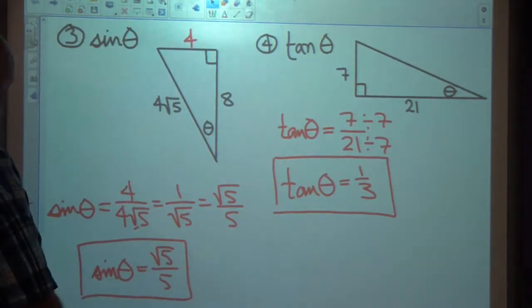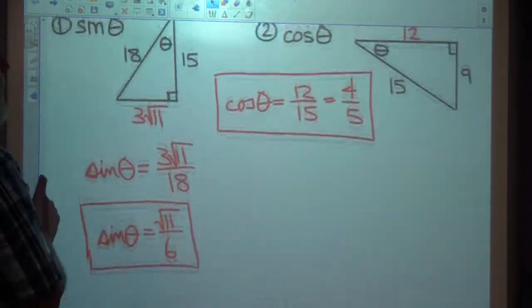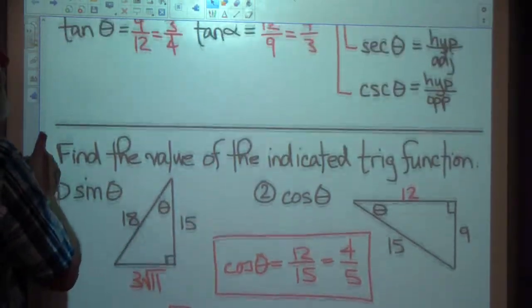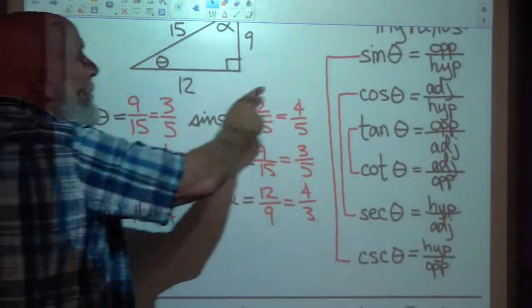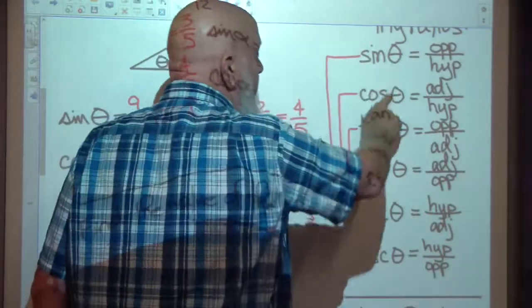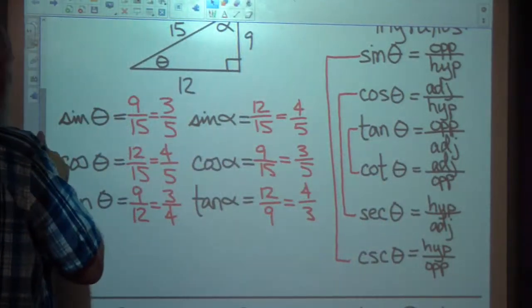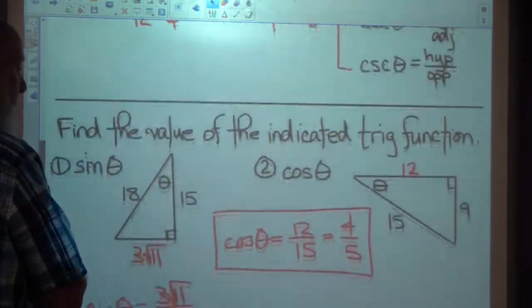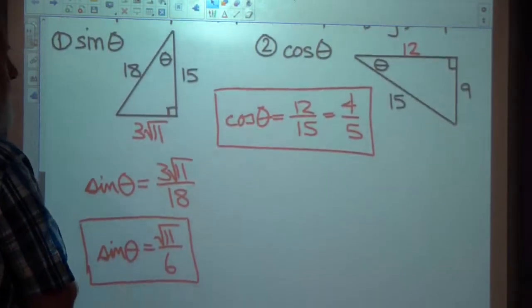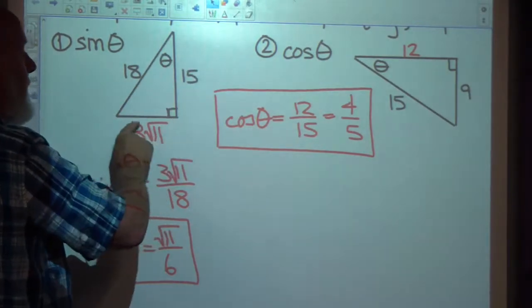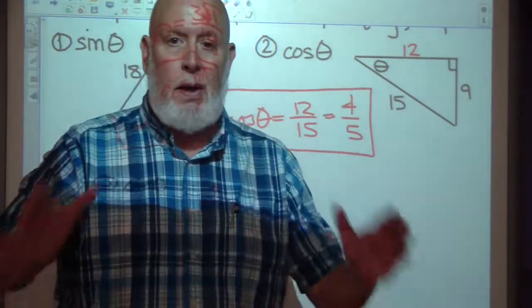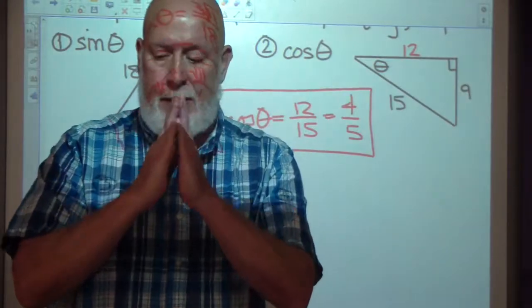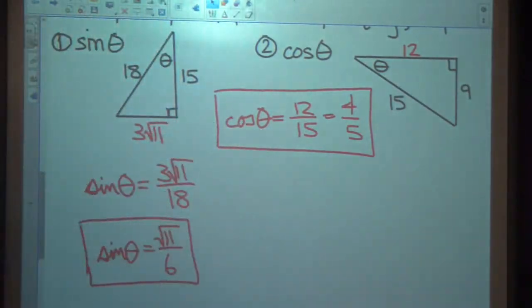This should all look very familiar. We are using trigonometric ratios — the definitions of trig ratios — and the Pythagorean theorem to find the lengths of missing sides of right triangles. You can do this. Thank you.